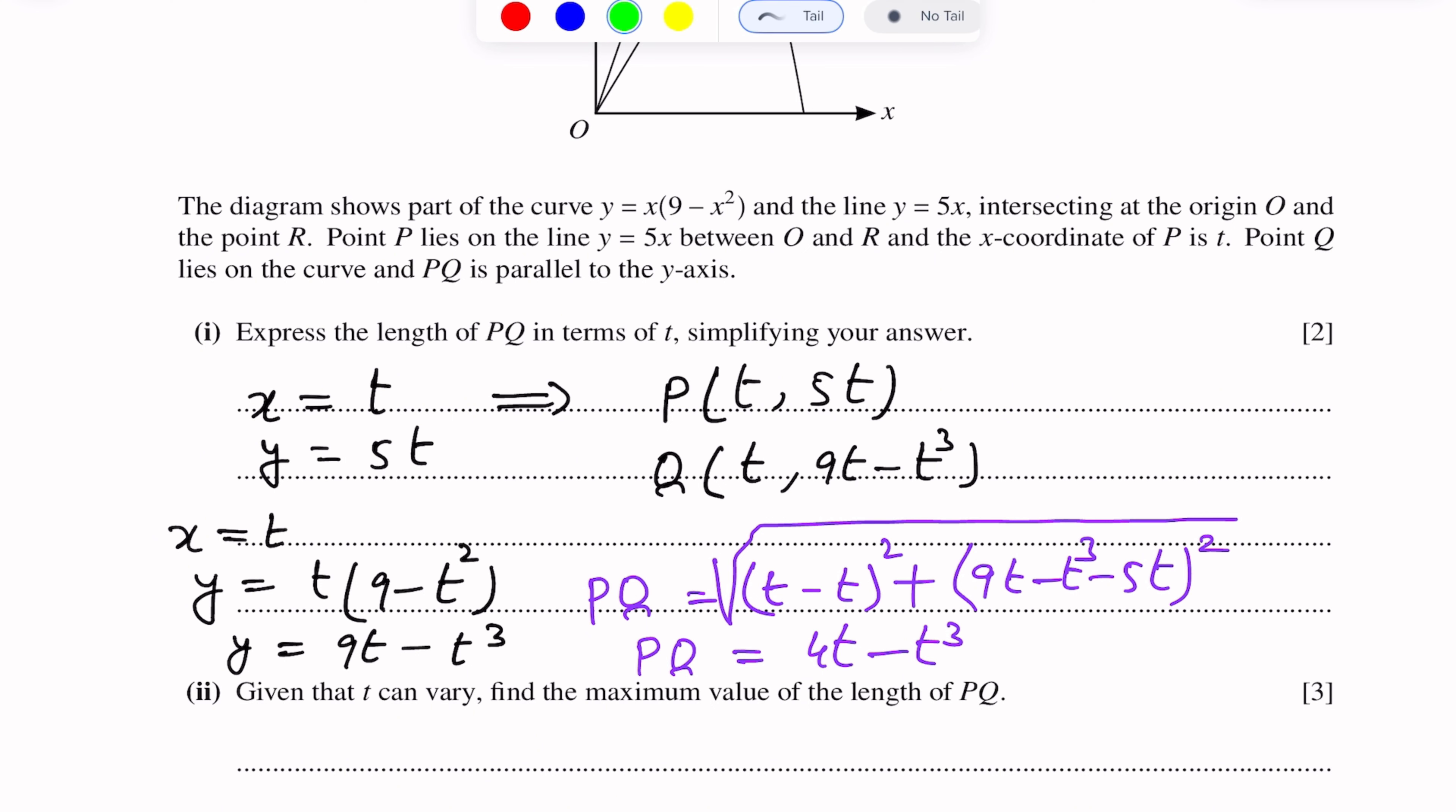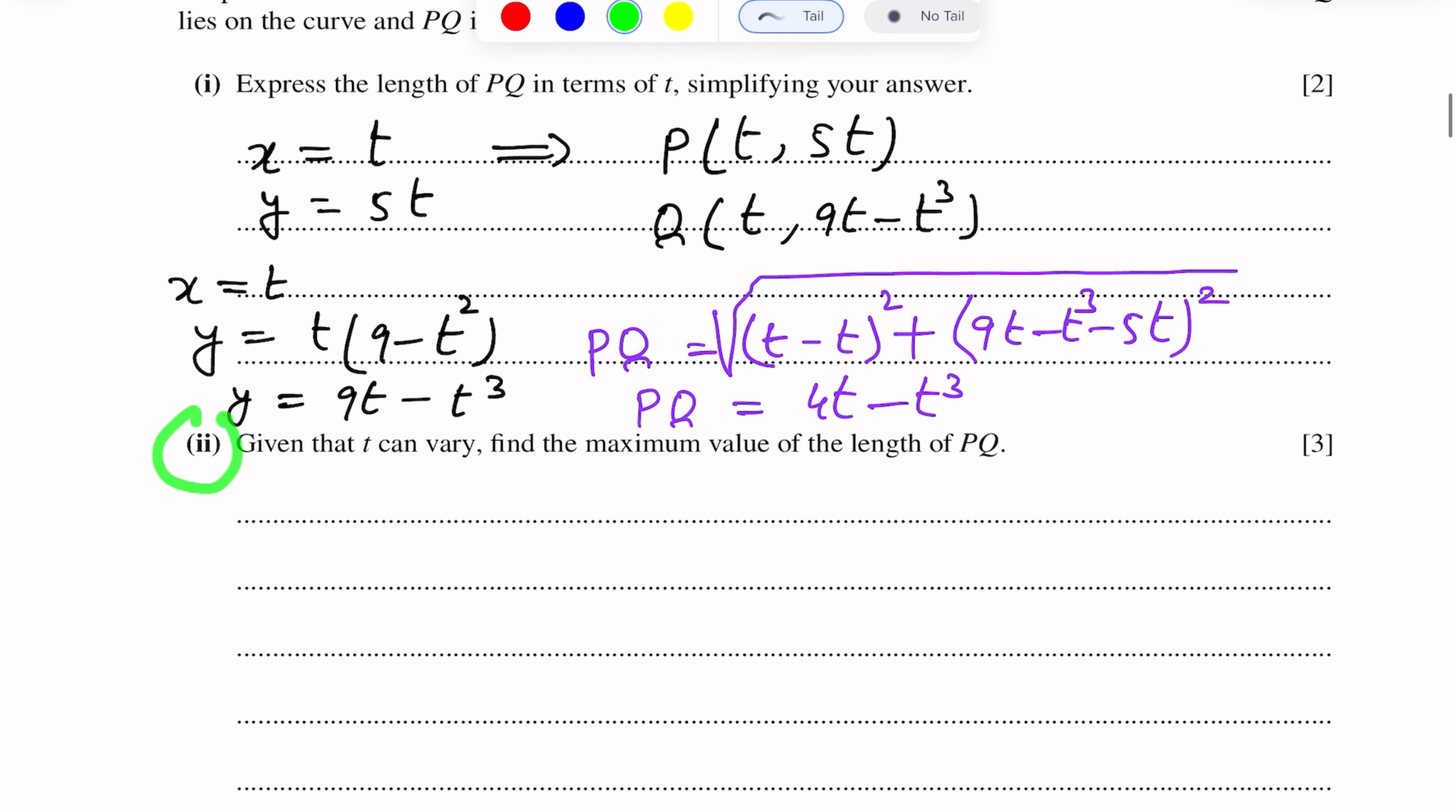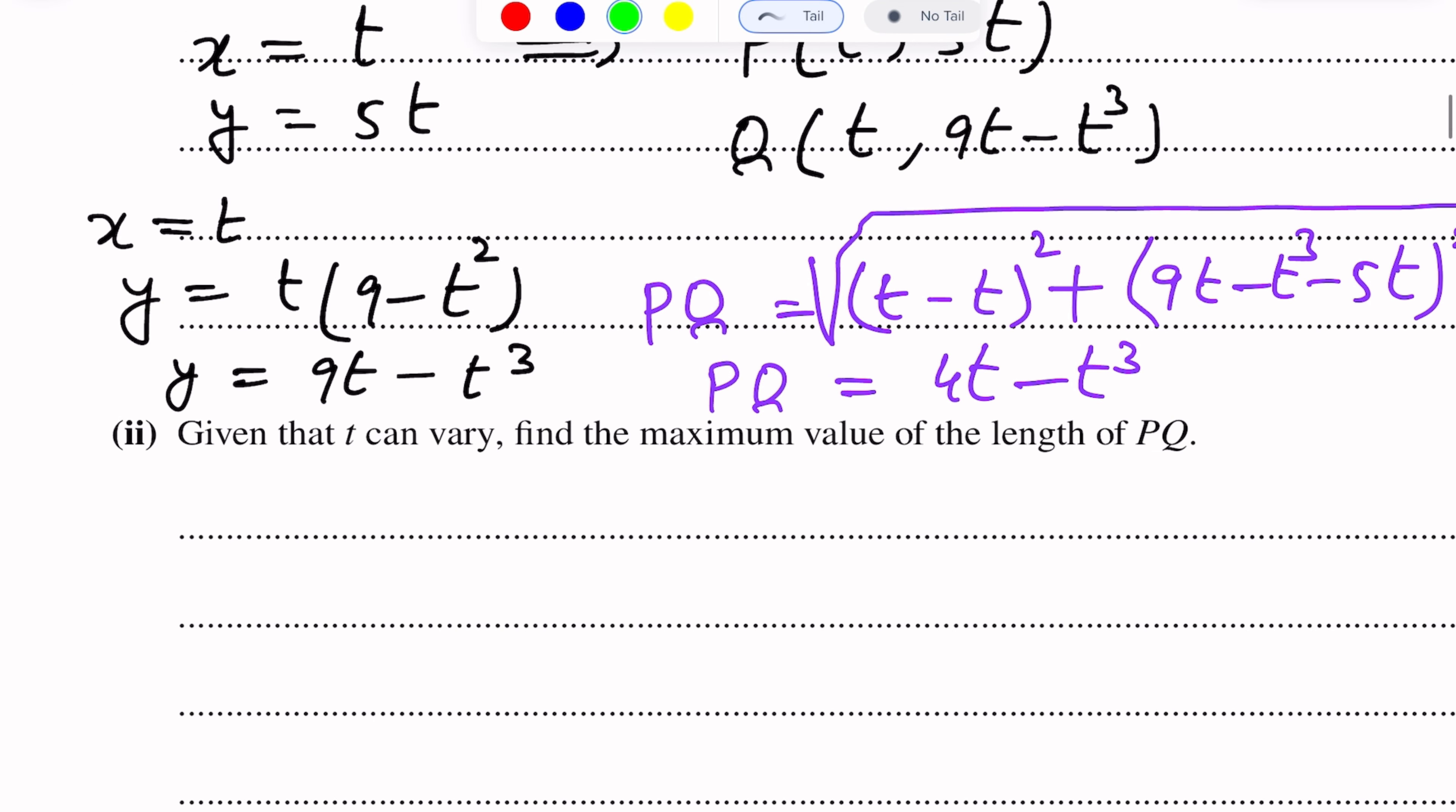This is the PQ distance in terms of t. Now the second part of this question is of differentiation, because it's given that t can vary. Find the maximum value of the length PQ. PQ is a function of t: PQ equals 4t minus t cubed.